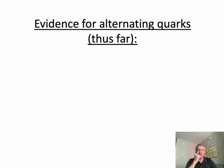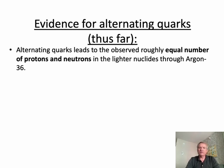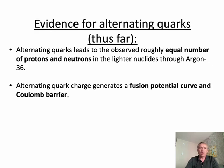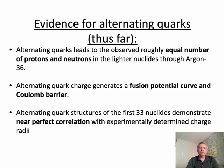So let's review the evidence for alternating quarks thus far. Alternating quarks leads to the observed roughly equal numbers of protons and neutrons through argon-36. Alternating quarks generate a fusion potential curve and a Coulomb barrier. Now we will use alternating quark structures to predict near-perfect correlation with experimentally determined charge radii.